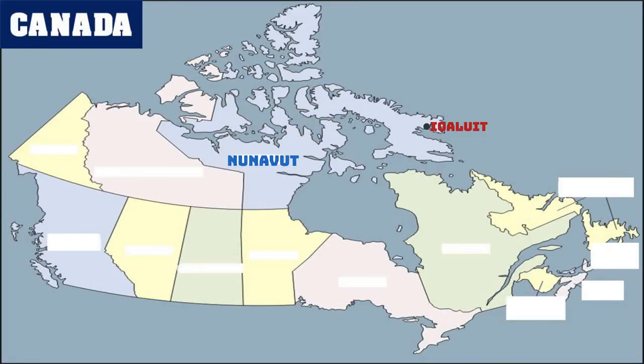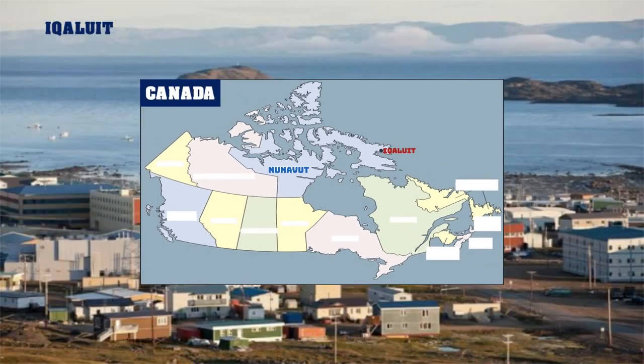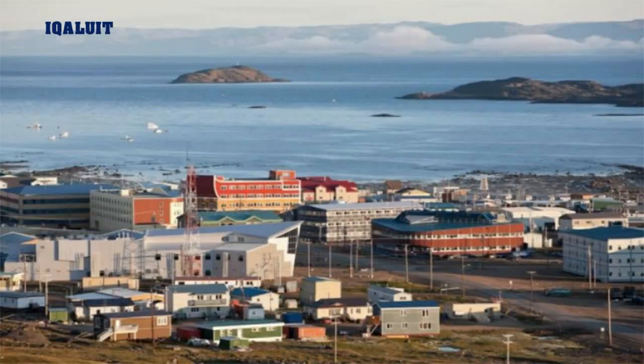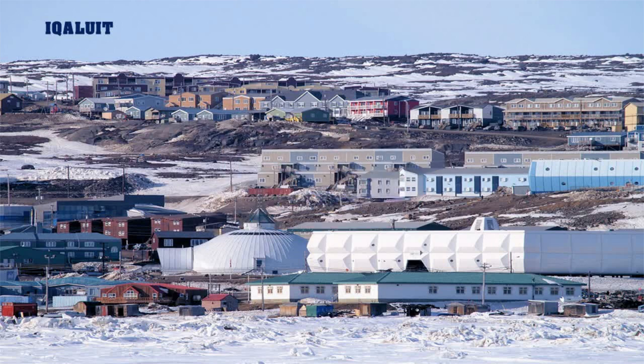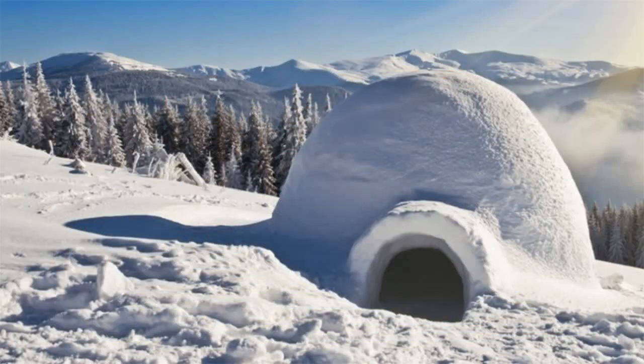The capital is Iqaluit, meaning 'place of fish.' It sits on vast Baffin Island in Frobisher Bay. The island is known for its ice-capped mountains and tundra valleys.